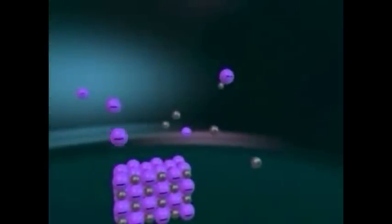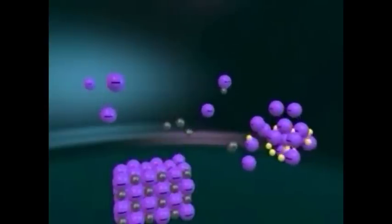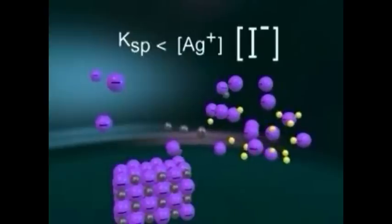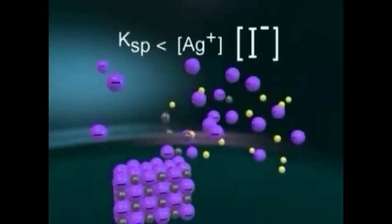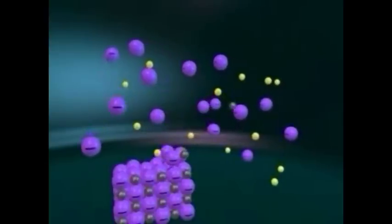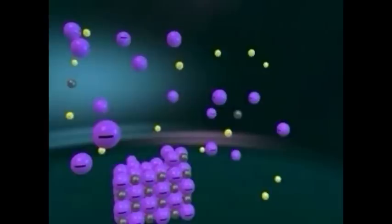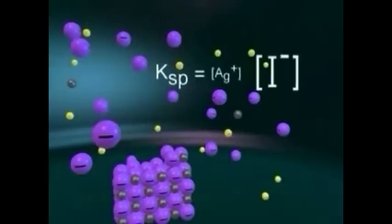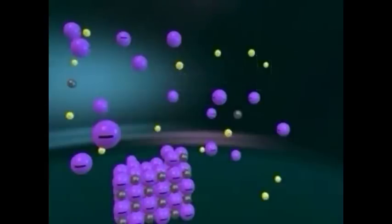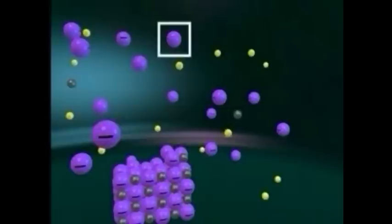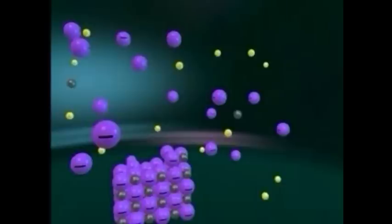The silver and iodide ions are of equal concentration in the solution. When sodium iodide, a soluble salt, is added, the concentration of iodide ion is greatly increased. This means that the product of the silver and iodide concentrations exceeds the solubility product constant. Because the product of the ion concentrations exceeds Ksp, additional solid silver iodide forms until the product of the iodide and silver ion concentrations again equals Ksp. At equilibrium, the silver ion concentration is much smaller than the iodide concentration. The addition of sodium iodide, which greatly enlarges the concentration of one of the ions in the solubility equilibrium, has reduced the solubility of silver iodide. This reduction in solubility is an example of the common ion effect.